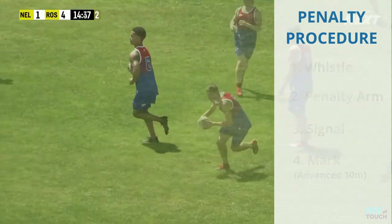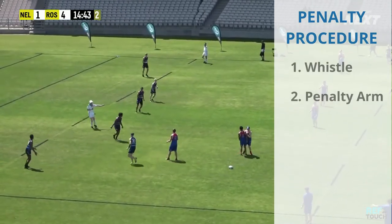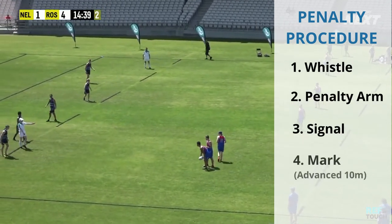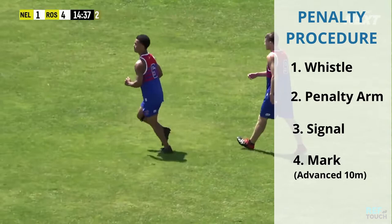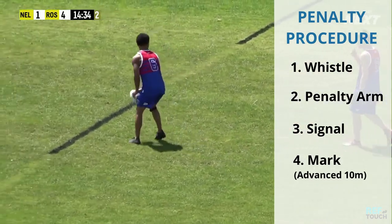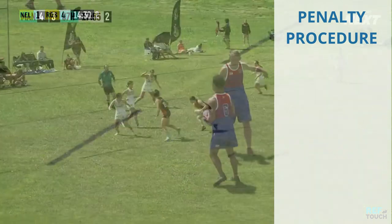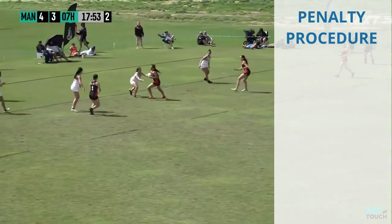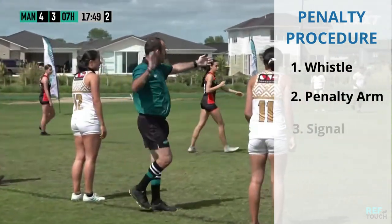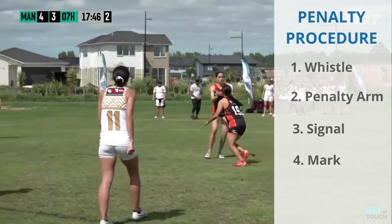Here we have a penalty for in the ruck. The whistle and penalty arm are applied at the same time, and notice how the referee moves to the mark, which is advanced 10 metres forward. Because of the proximity to the try line, there is no need to give a 10 metre signal, but rather communicate to the defending team to move to the try line in order to be onside. This is the same when penalties are awarded on the try line — there is no requirement to give a 10 metre signal, as the players are likely already where they need to be in order to be onside.